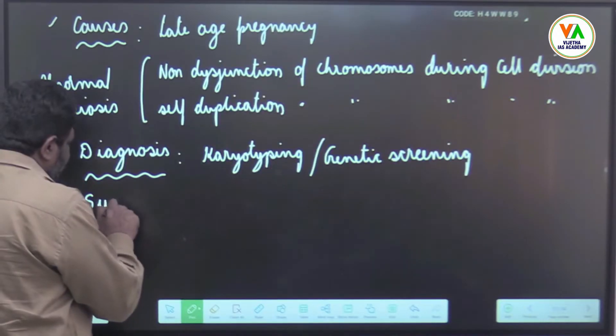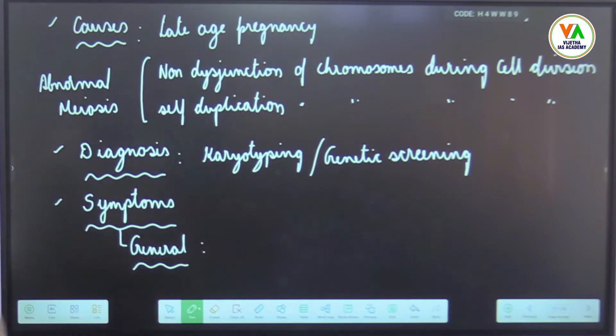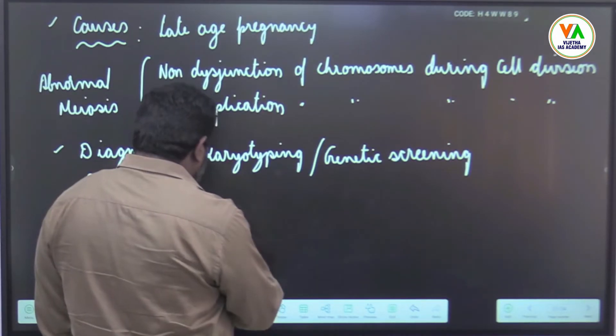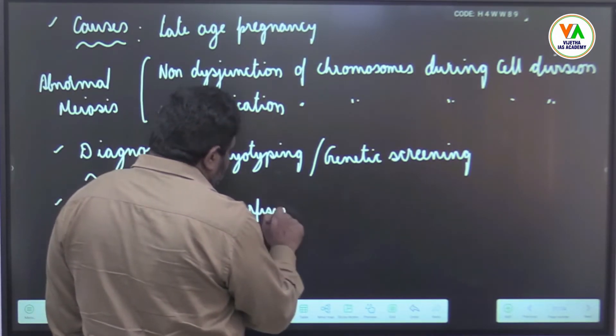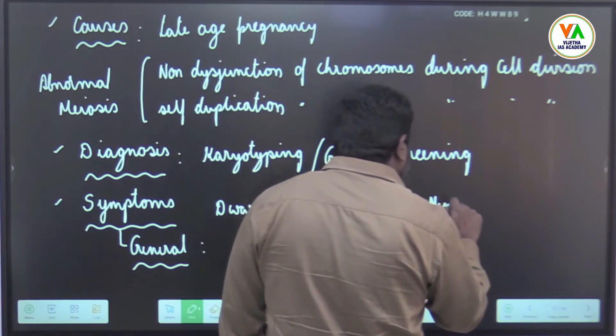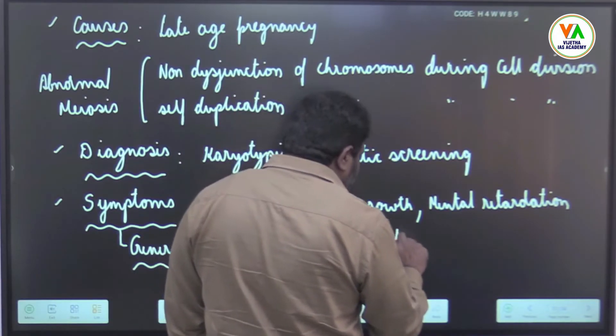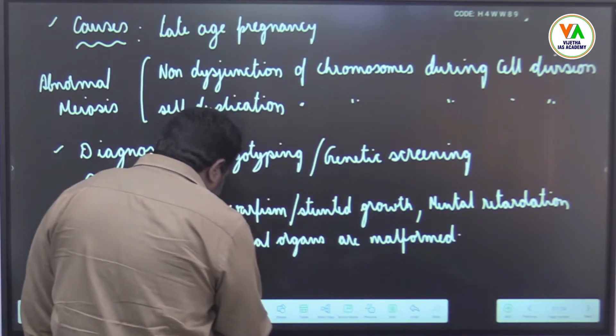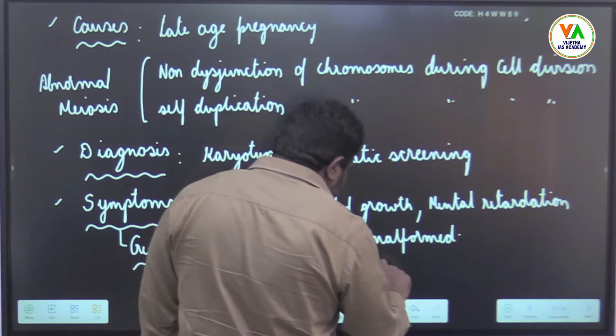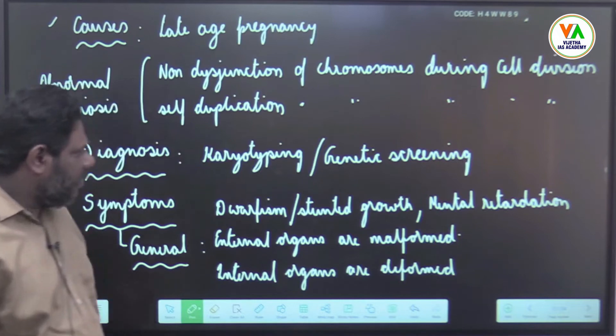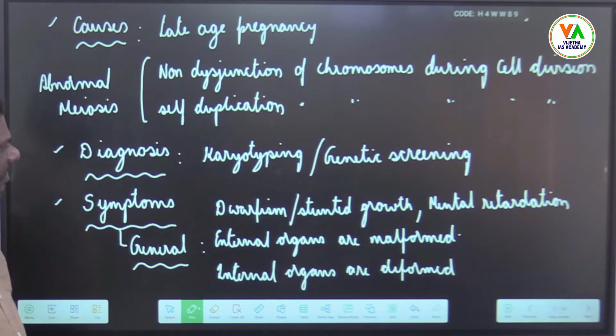Symptoms: general symptoms include dwarfism or stunted growth, mental retardation. External organs are malformed, even internal organs are deformed. Internal organs like liver, kidney, etc. are affected. So these are the general symptoms.